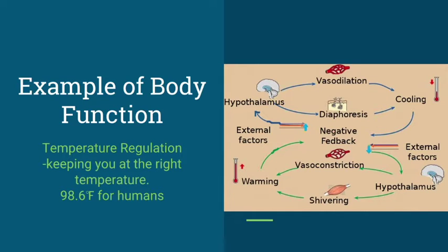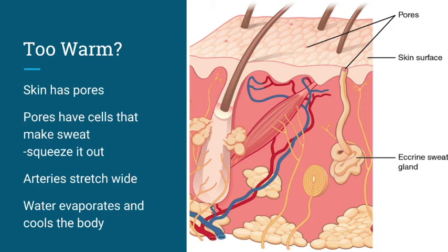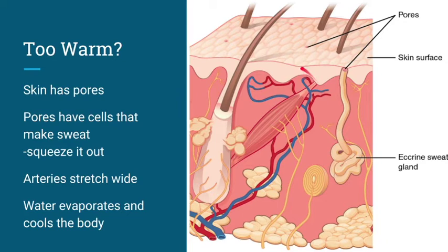Let's look at one example of body function: temperature regulation. For humans, you must stay at around 98.6 degrees Fahrenheit. Your body must keep you at this right temperature. This image is a model that describes how your body functions to keep you at the right temperature. What happens when you get too warm? Well, your skin has a bunch of pores in it. Each of these pores are made up of a bunch of cells. The cells produce the function of making sweat, and then the tissue — which is the pore — squeezes that sweat out to the surface of your skin. Another function is that the arteries and veins stretch wide, which increases blood flow to the surface of your skin — that's why you become red when you're too warm.